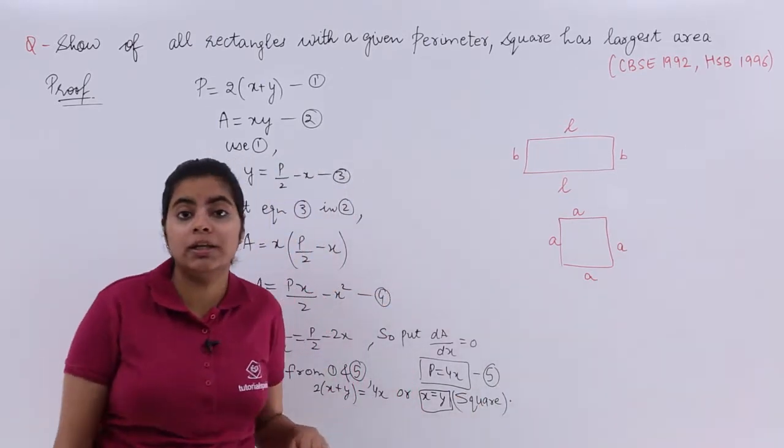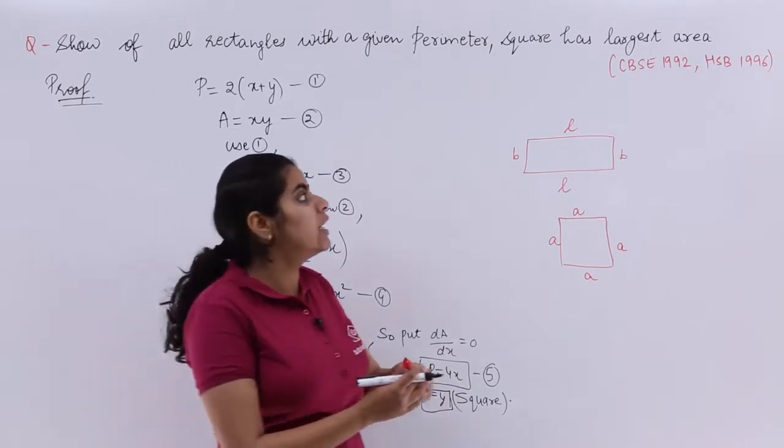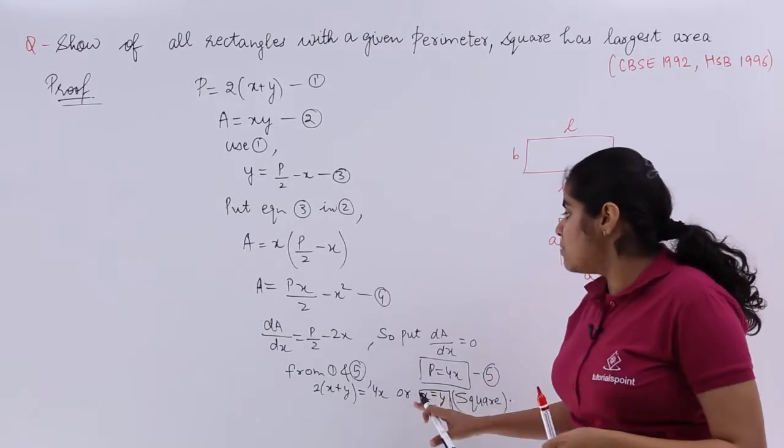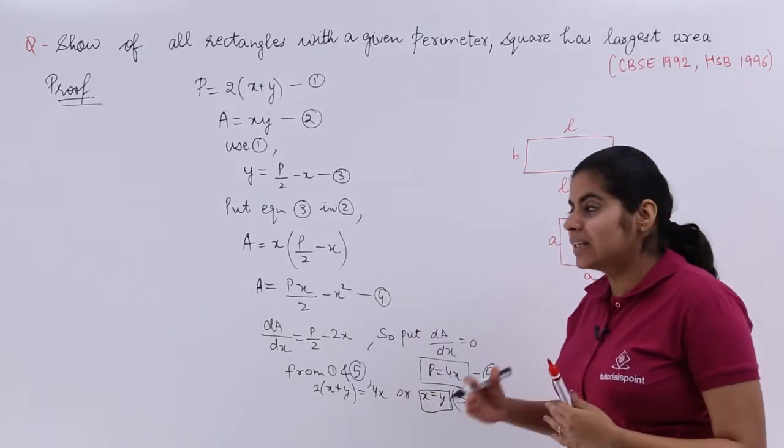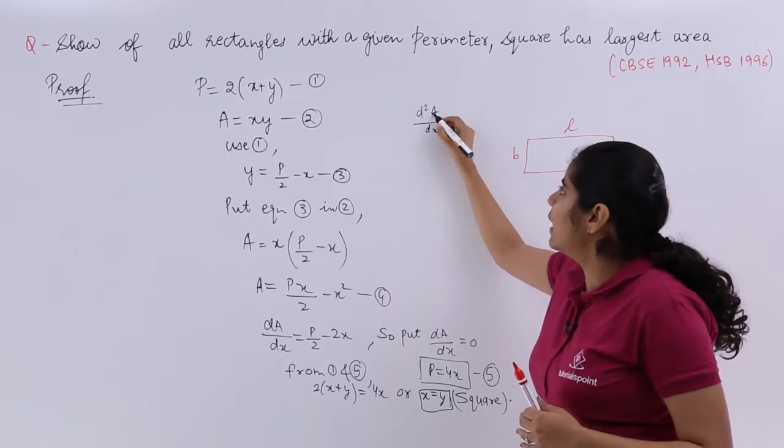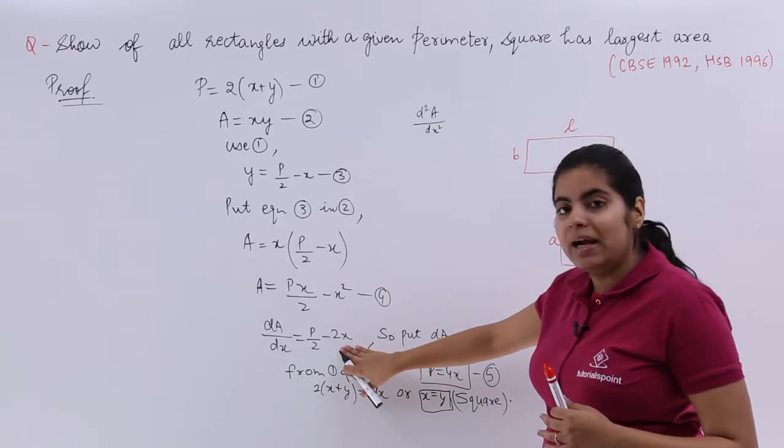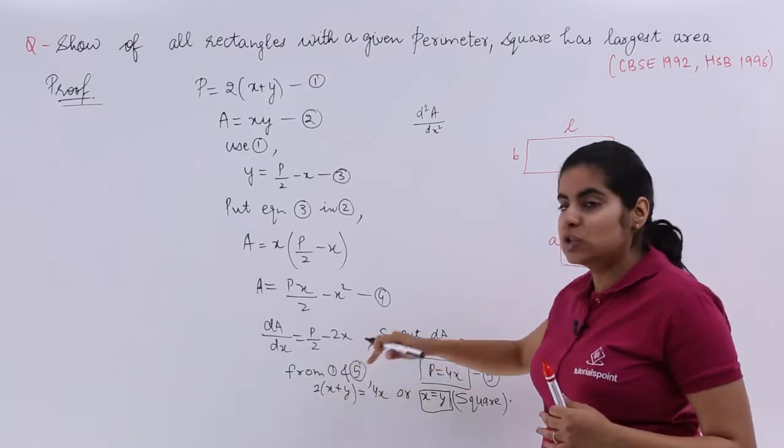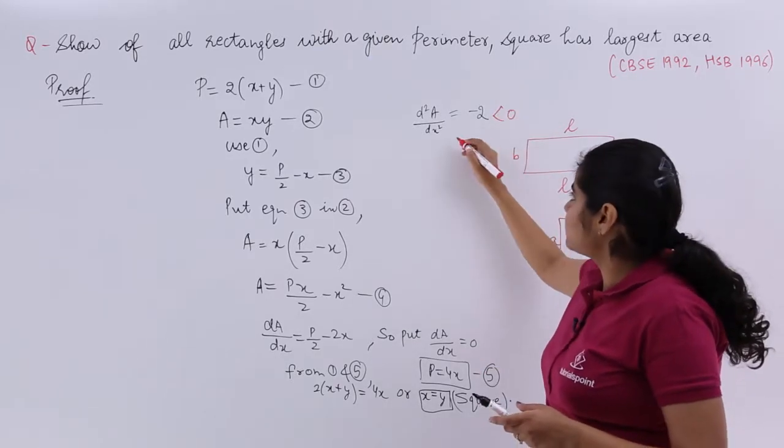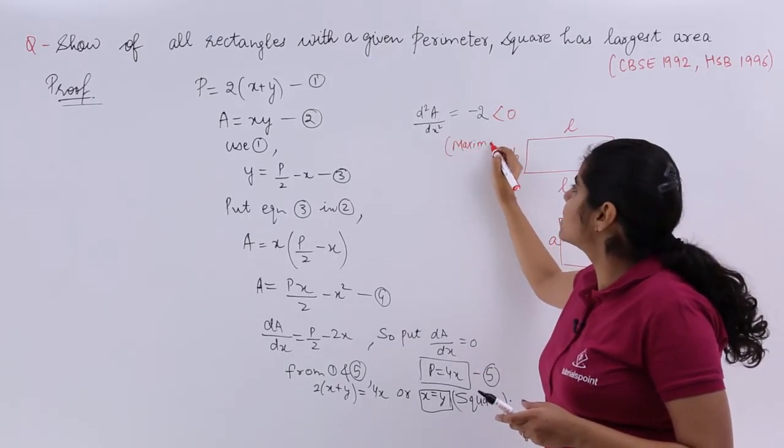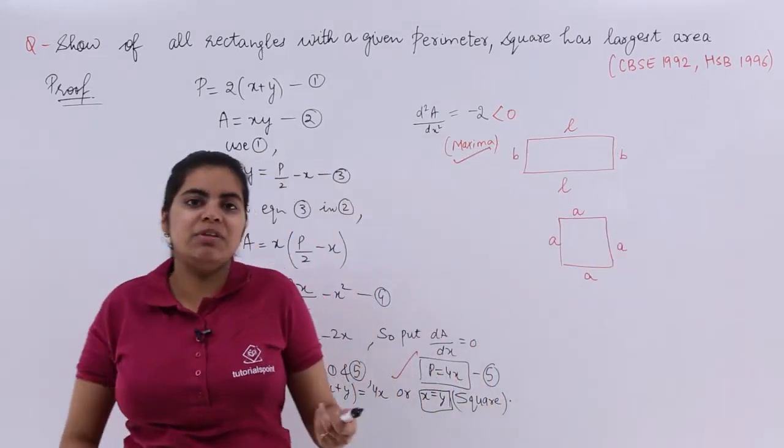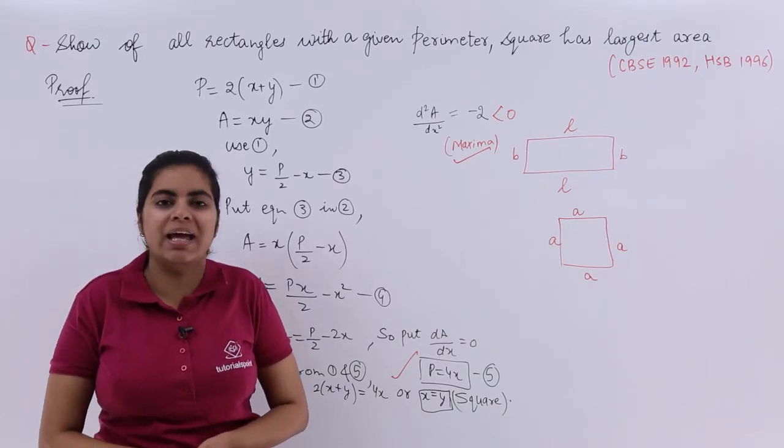But my solution is still not complete, because it is coming out to be square. But square with the largest area, that we have to prove. So we have to maximize also. And maximization would be possible after the second derivative. Finding D2A by DX square, differentiating DA by DX all over again, it becomes minus 2X. Differentiation is minus 2, and that is less than 0. Second derivative less than 0 means maxima. Maxima from here, square from here. That means we have proved what we needed to prove. Hence verified.